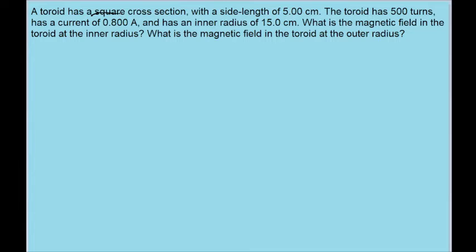Now don't get hung up on the part that mentions the square cross-section. The formula doesn't change. The magnetic field within a toroid always follows the same formula, which states that it is equal to the magnetic constant times the current carried by the toroid times the number of turns divided by 2π times the radial distance that we're looking at.